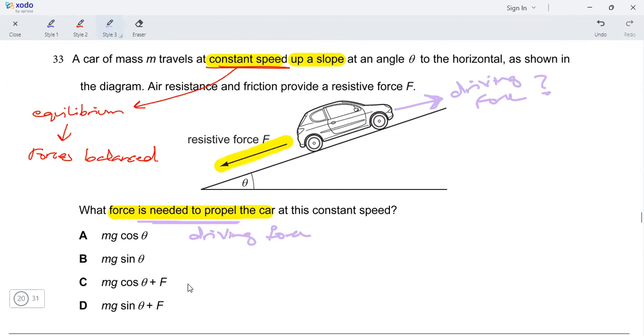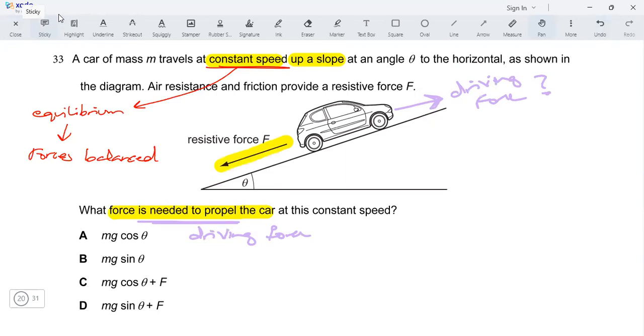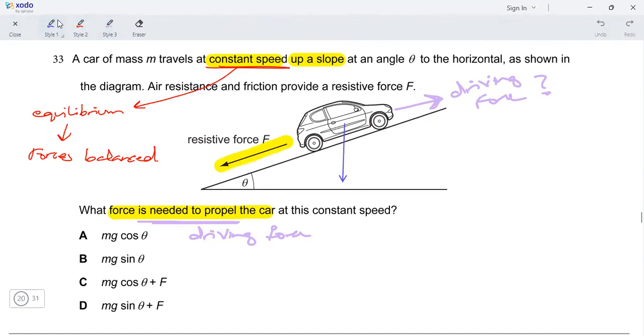So so far, we have the driving force up the slope and the resistive force down the slope. What else do we have? What other force is acting on the car? There is always weight acting on the car, and the direction of weight force would be straight down. Weight force is always acting downwards.